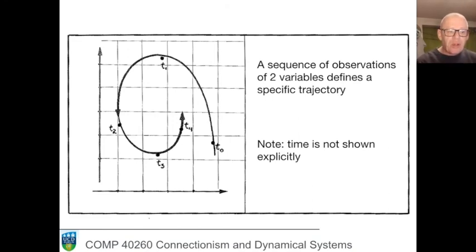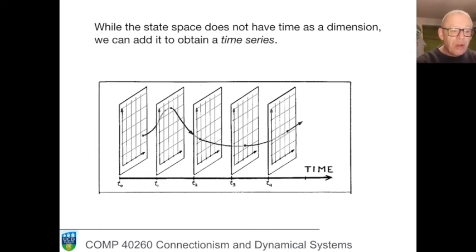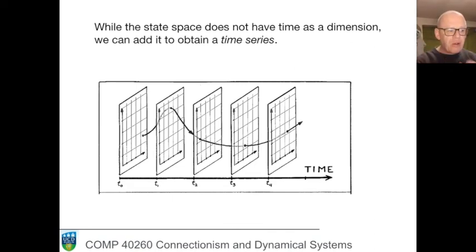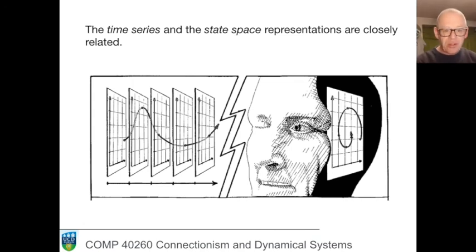The state space describes the evolution of state over time, but that representation does not include time explicitly. To add time explicitly we have to add a third dimension — and we can do that. The left-hand side then shows time explicitly, while the right-hand side, by choosing a specific point of view and collapsing that axis, picks out the familiar two-dimensional state space.